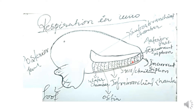As far as respiration in Unio is concerned, first of all water enters through the incurrent siphon. From the incurrent siphon, as the water enters it comes inside the body cavity, and slowly through the ostia the water enters into the water chamber.